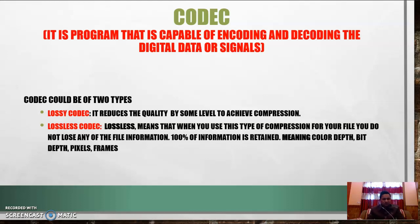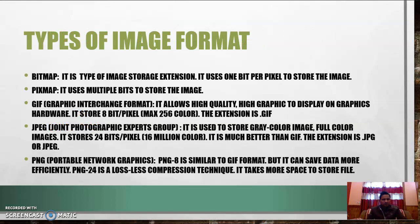Types of image formats include bitmap, pixmap, GIF, JPEG, and PNG. Bitmap is a lower-quality image format that uses one bit per pixel, resulting in poor picture quality. Pixmap also stores images but uses multiple bits per pixel. GIF (Graphical Interchange Format) allows high-quality graphics display on graphic hardware, stores 8 bits per pixel, supports up to 256 colors, and uses the .gif extension.